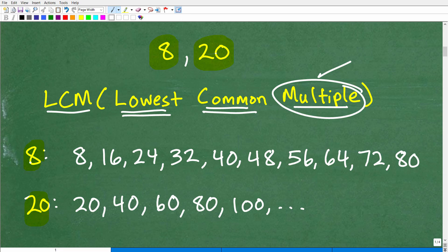We'll start with the first multiple. Eight times one is eight, so eight itself is a multiple of eight. Eight times two is 16, so 16 is a multiple of eight. Eight times three is 24. 24 is a multiple of eight. 32 is a multiple of eight because eight times four is 32, and you get the idea. These are all multiples of eight.